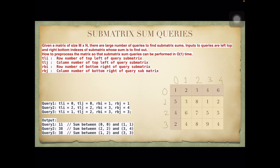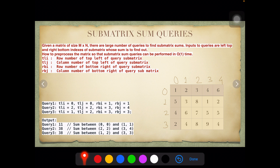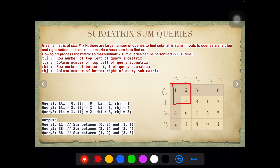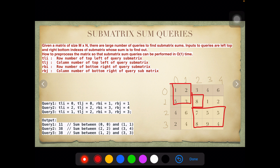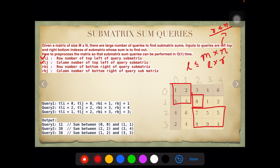Submatrix sum queries: given a matrix of size M×N, there are a large number of queries to find the sum of submatrices. Inputs to queries are the top-left and bottom-right indexes of the submatrix whose sum is to be found. In a given matrix, there are a lot of possible submatrices. Any L×R submatrix where L ≤ M and R ≤ N is a valid submatrix.